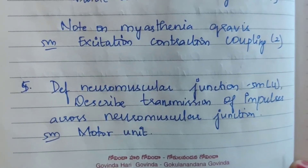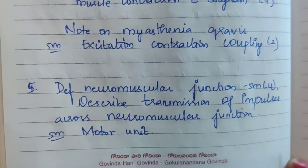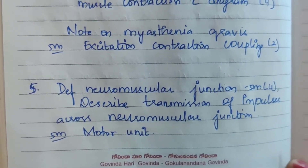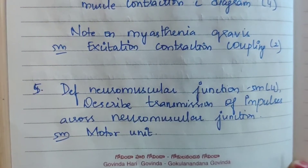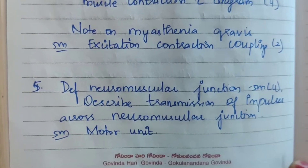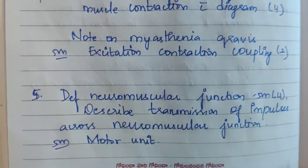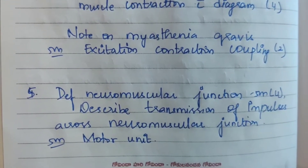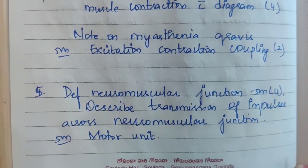Fifth question: Neuromuscular junction — asked four times for 5 marks and also in 15 marks. Describe transmission of impulses across neuromuscular junction — asked for both 15 marks and 5 marks. Motor unit is also attached to this topic.